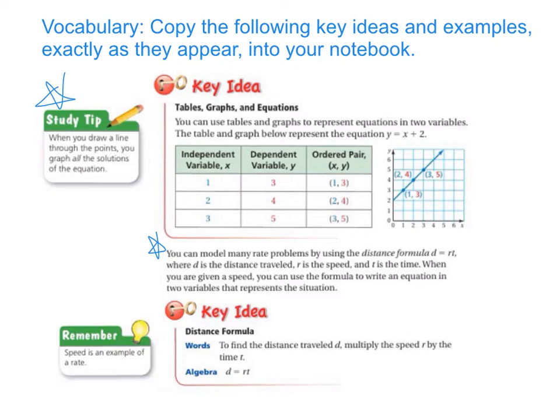So the key idea is the distance formula. To find the distance traveled, multiply the speed, r, by the time, t. So your formula looks like this: d equals r times t. And you need to remember that speed is one example of a rate.